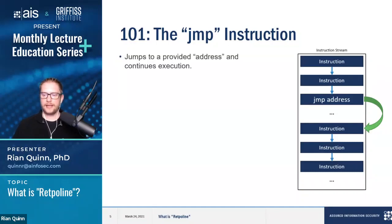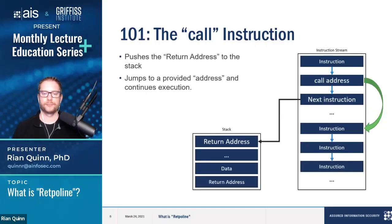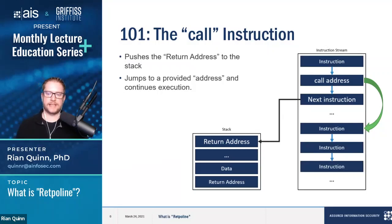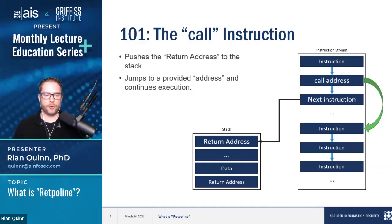It's important to note that the address is encoded with the jump instruction, meaning the actual address of where it's going to jump is known — it's embedded inside the instruction. The call instruction is similar: like the jump instruction it will jump to some location in memory, but before it does, it pushes the location of the next instruction onto what we call the stack. The stack is like a stack of plates in a cabinet — you push things onto it and pop them off.